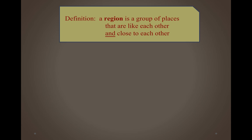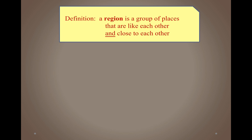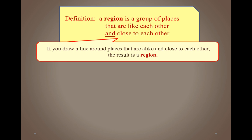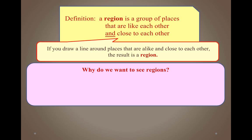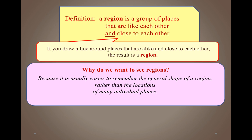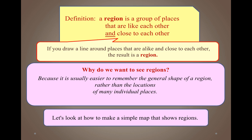A region is a group of places that are like each other and are close to each other. If you draw a line around places that are alike and close to each other, the result becomes a region. We want to see regions because it's easier to remember the general shape of a region rather than the locations of many individual places — that's why we group things together.